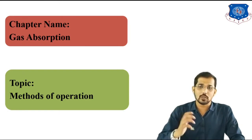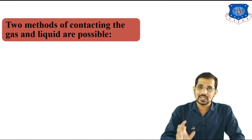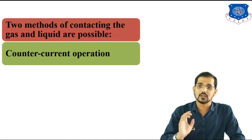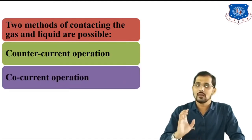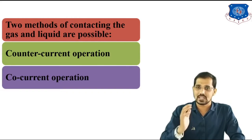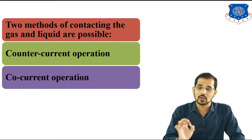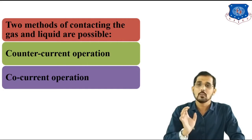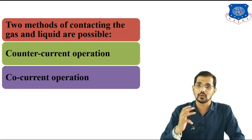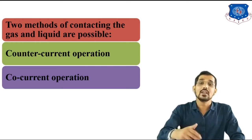Now we are going to study methods of operation. Two methods of contacting the gas and liquid are possible: countercurrent operation and co-current operation. In countercurrent operation, both the gaseous stream and liquid stream come from opposite directions, while in co-current operation both streams come from the same direction.